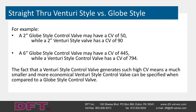Straight-through Venturi-style versus globe-style: Venturi-style control valves generate higher CVs than globe-style control valves. For example, a 2-inch globe-style control valve may have a CV of 50, while a 2-inch Venturi-style control valve has a CV of 90. A 6-inch globe-style may have a CV of 445, while a Venturi-style control valve has a CV of 794. The fact that a Venturi-style control valve generates much higher CV means a smaller and more economical valve can be specified compared to a globe-style.